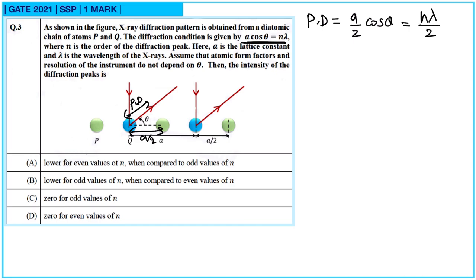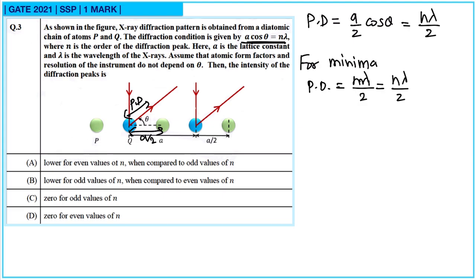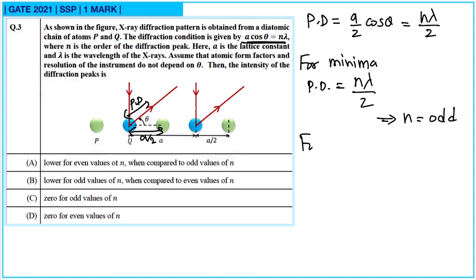Since the question gives A cos θ = Nλ, the path difference becomes Nλ/2. Now for the minima condition, the path difference must be an odd multiple of λ/2 — that is, Mλ/2 where M equals N. So for minima, N must be odd.